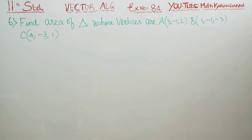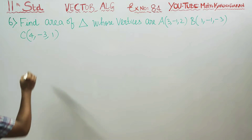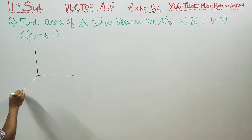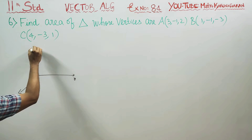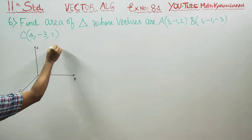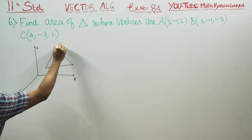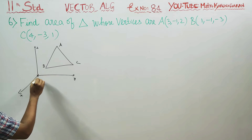Dear Levin Standard students, in exercise number 8.4 vector algebra sum number 6, find the area of the triangle. Just take 3 axes: x-axis, y-axis and z-axis. There is a triangle with the vertices ABC.